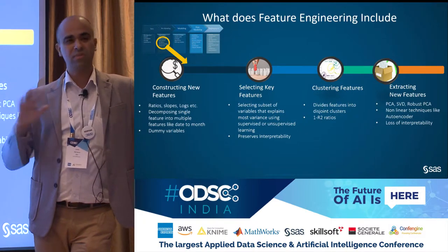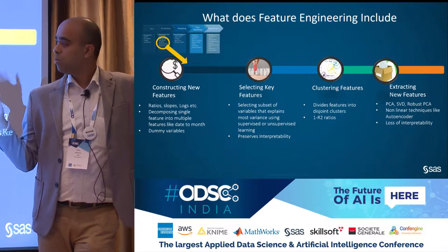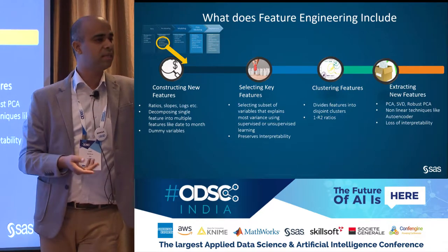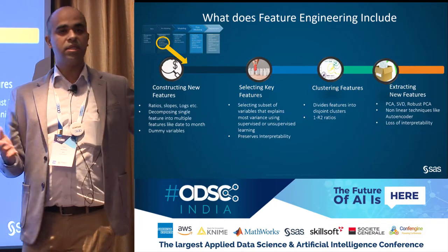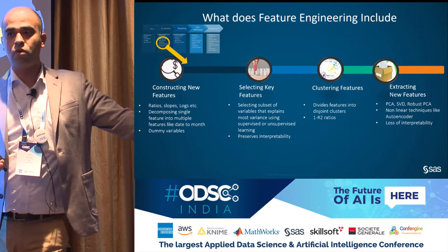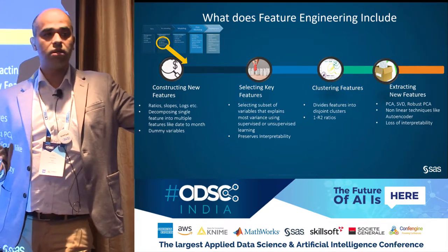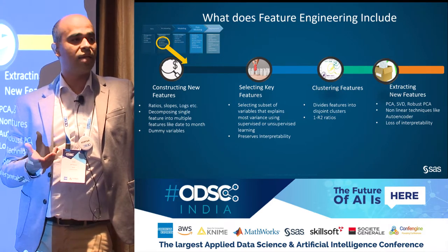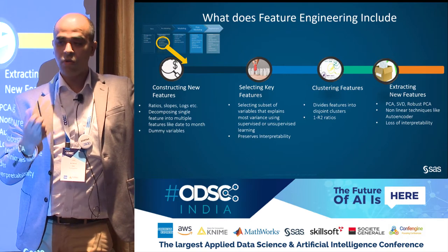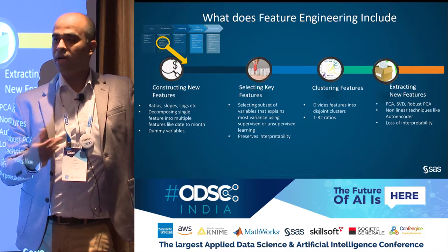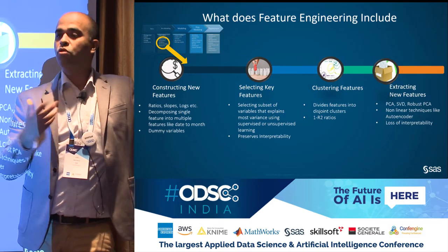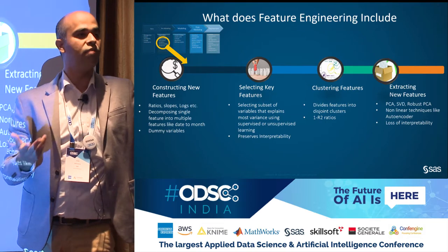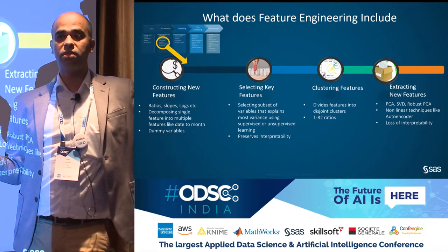There are four processes to address this curse. One is constructing new features — this is akin to preparing data from the existing datasets. This could be logarithmic transformations, inverse transformations, autoencoders, level encoding, or creating variables from existing ones. For example, if you're given a date of birth of a customer, or when a person bought a policy from an insurance company, you create the tenure of that customer with a particular organization. That's predominantly part of constructing new variables.